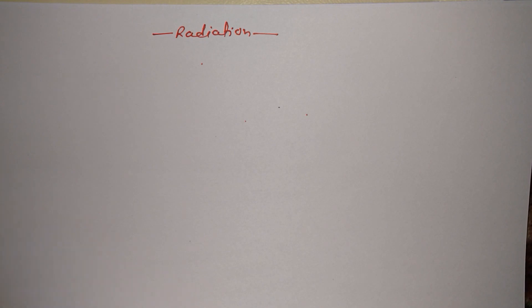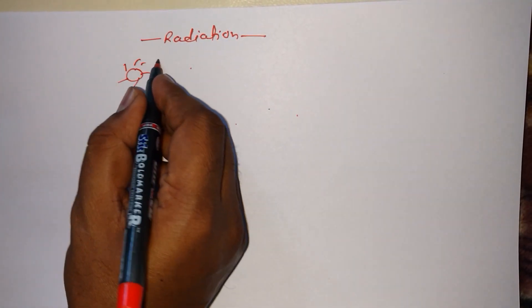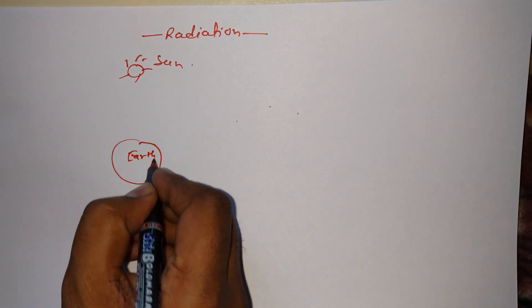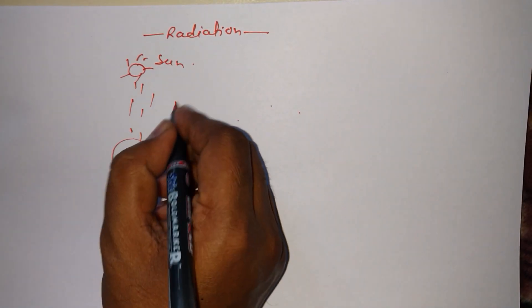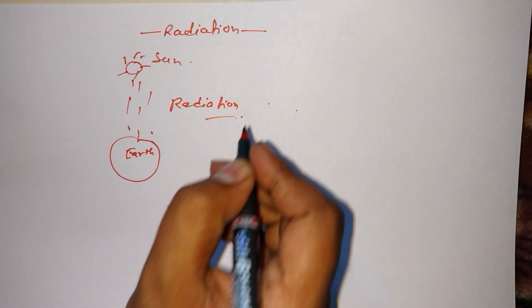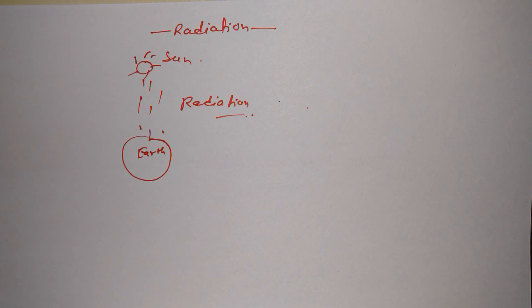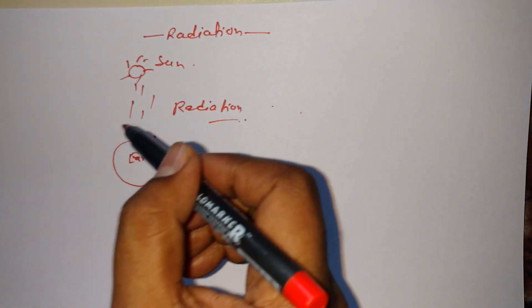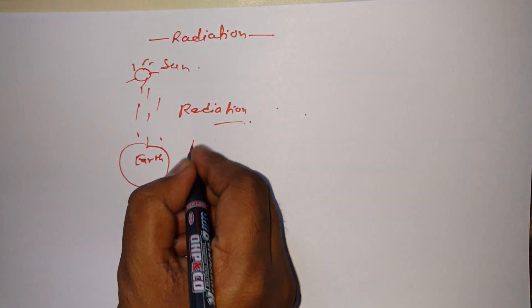In this video we are going to learn about radiation. What is radiation? Suppose we have the sun here and the earth here. The transfer of heat from the sun to the earth is known as radiation. The key point is that this transfer of heat from one place to another takes place without any physical medium — no physical medium is present.